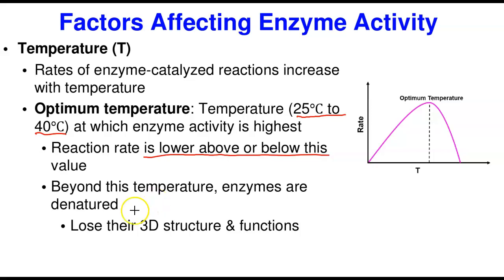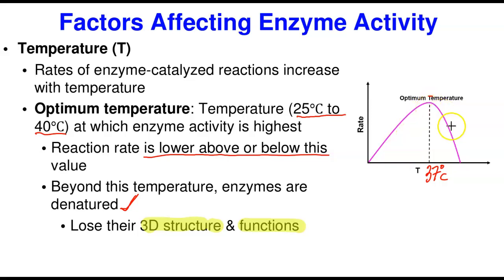The reaction rate is lower both above and below this optimum temperature value. Beyond this temperature, the enzyme is denatured or destroyed — it loses its three-dimensional structure and hence its function. If you look at the graph, the optimum temperature is at the top of the curve. Initially, the rate increases until it gets to this peak point. But the moment it increases higher beyond that point, it drops very fast — at that point, the enzyme will not function at all. Here below the optimum temperature, and here above the optimum temperature — looking at both above and below, the activity of the enzyme is going to drop.